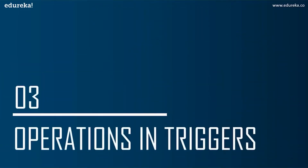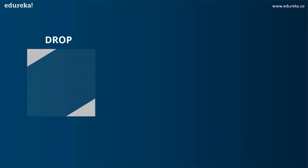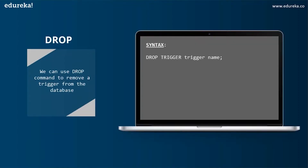Let's now implement an example of a trigger in SQL. The next topic is operations in triggers. We can perform many operations using triggers — some simple and some more complex, but once we go through the query it's easy to understand. The first operation is DROP. We can use the DROP command to remove a trigger from the database, and the syntax is: DROP TRIGGER trigger_name.